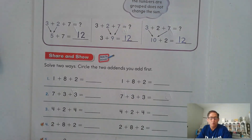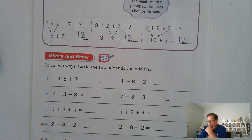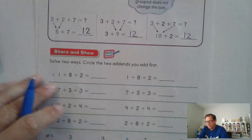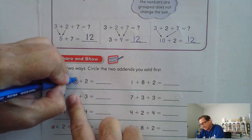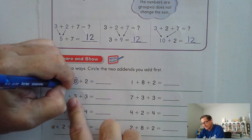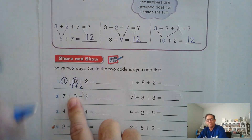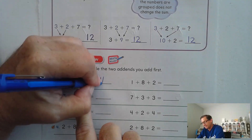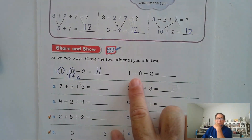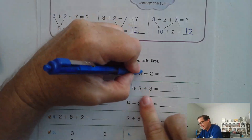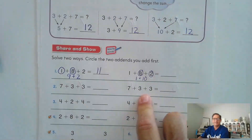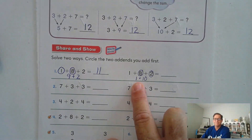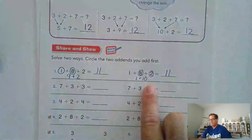Number one: solve two ways and circle the two addends you add first. Here you might look at one plus eight plus two and say, one plus eight is nine. And then nine and count on two more — eleven. But somebody else might look at this and say, oh, eight and two makes a ten. And then add the one to the ten — one plus ten is eleven. You notice it doesn't affect the sum.